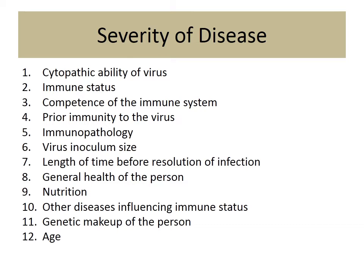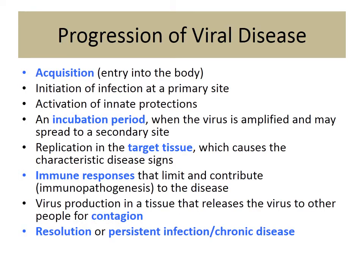Age is important because the extremes of age are where you are more susceptible to viral infection. For example, a young healthy male in his early 20s should not have pneumocystis carinii pneumonia (PCP) or any pneumonia at all — if they do, something is wrong with the immune system and it must be investigated.